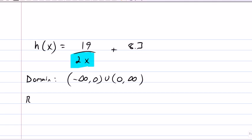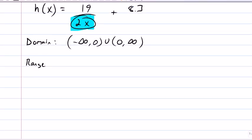Range. 2x is going to be everything except zero. So, imagine what happens when you divide 19 by every single number not equal to zero.